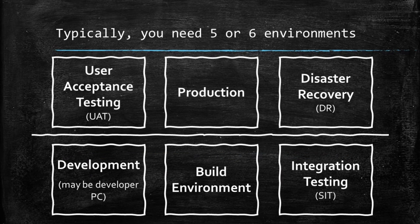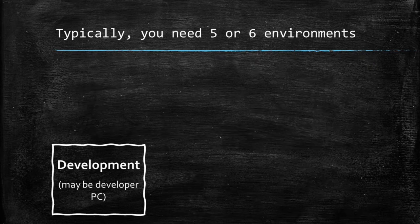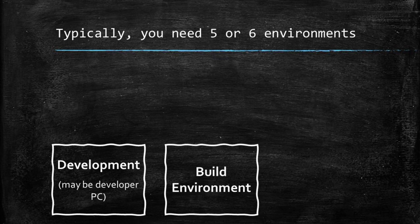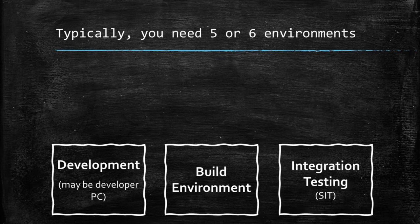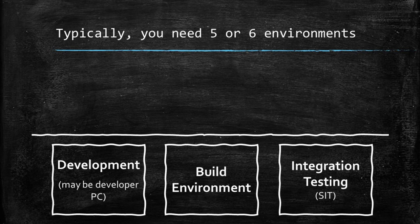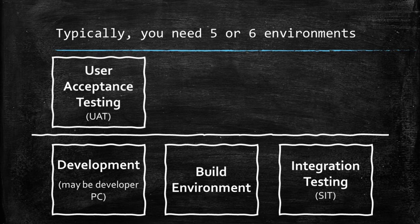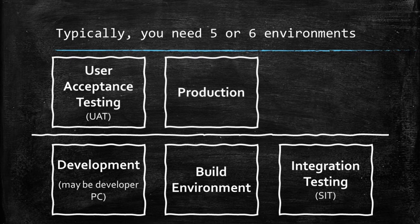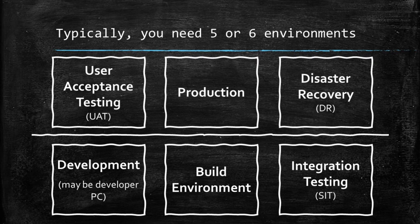First, let's look at what a typical setup might be like. You need five or six machines in order to get one which actually runs the software that you want to have running — the system that you have in mind. These are: development, a build machine, an integration testing or SIT machine, a user acceptance testing or UAT machine, a production machine — this is the machine you actually wanted in the first place — and finally DR, or disaster recovery. That's the full six.